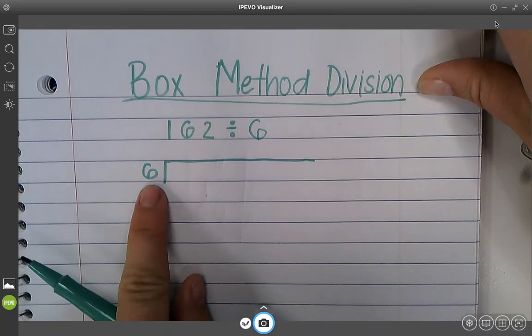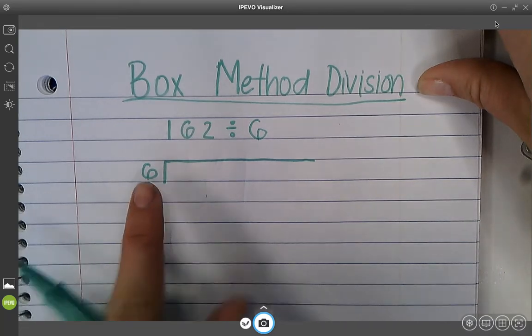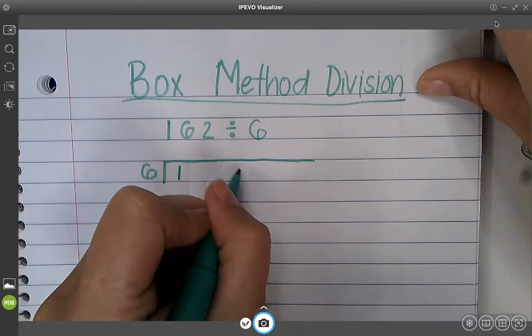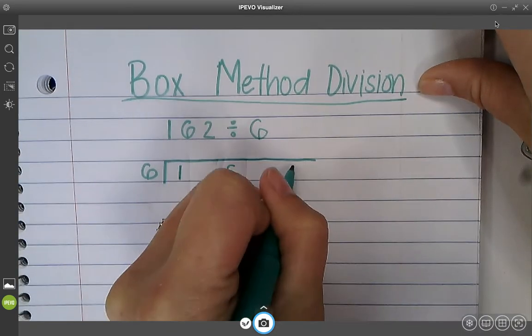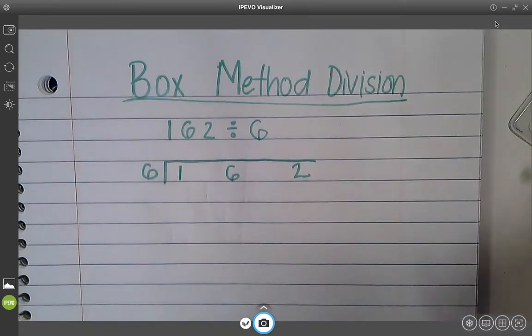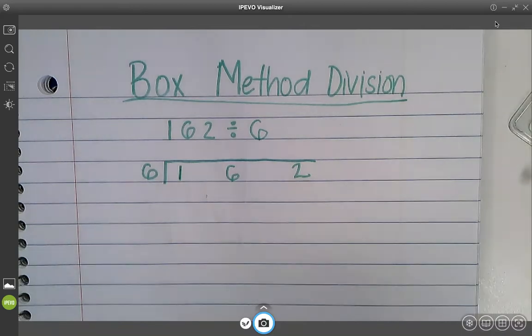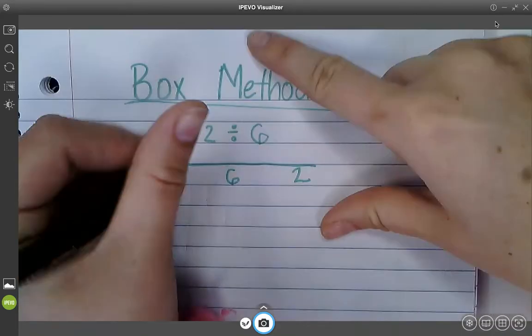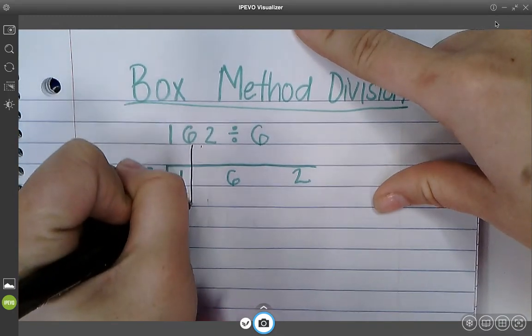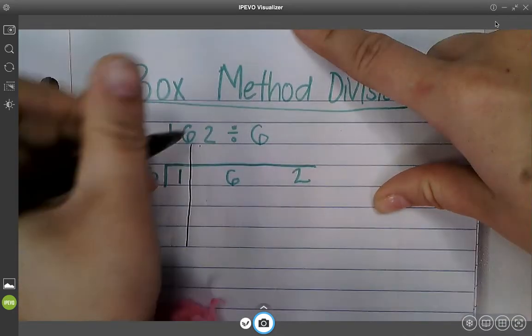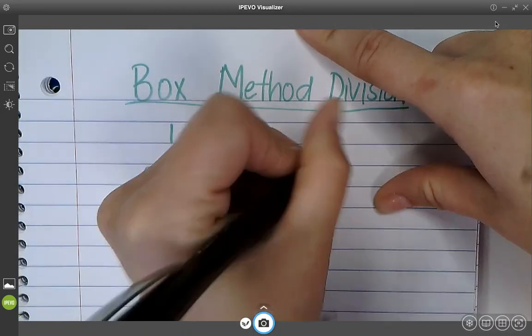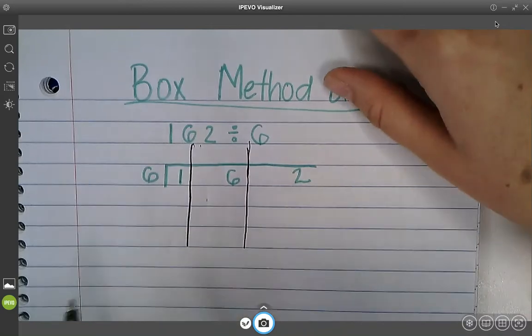The number we are dividing by is 6. So this goes on the outside. Then we're going to kind of do something a little funny here is give ourselves some room. You kind of want the numbers pretty spaced out and you'll see why in just a minute. Then we need to go ahead and kind of break our number up and draw some lines down. This is kind of where you get the box method to show place value.